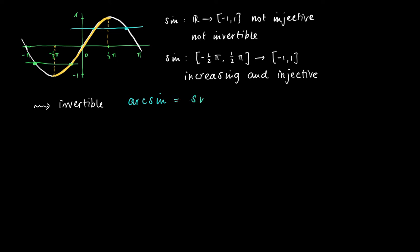Be careful: sine with a superscript minus 1 does not mean 1 over the sine — it means the inverse of the sine. The domain of the arc sine is the range of the sine, which is the closed interval [-1, 1]. And the range of the arc sine is the domain of the restricted sine, which is [-π/2, π/2].